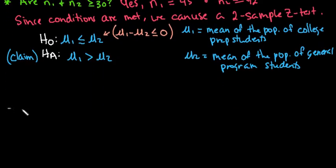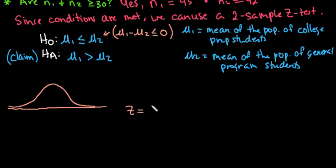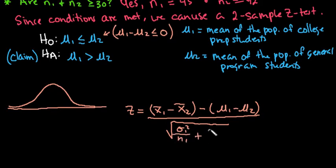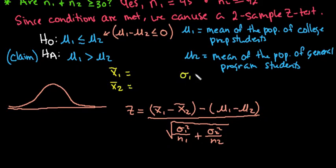Our next step is to write out all of our important information, draw our model, and find our standardized test statistic. The formula for z is: x-bar one minus x-bar two, minus (mu one minus mu two), all divided by the square root of sigma one squared over n one plus sigma two squared over n two. We need to identify x-bar one, x-bar two, sigma one, sigma two, n one, and n two.